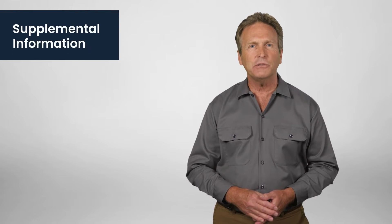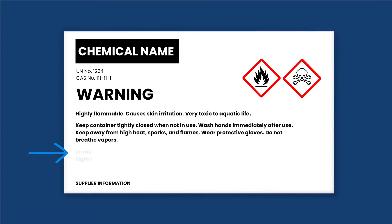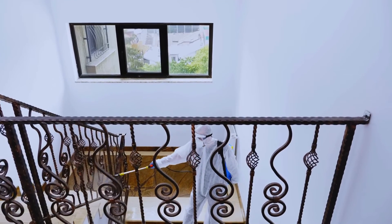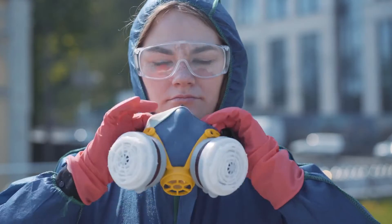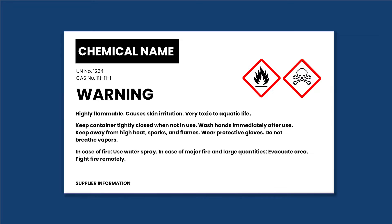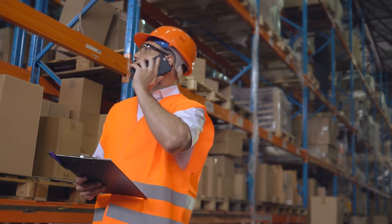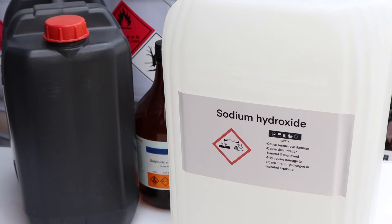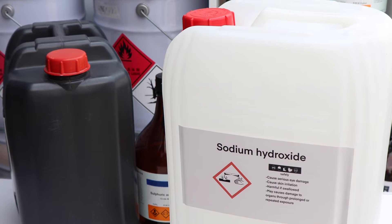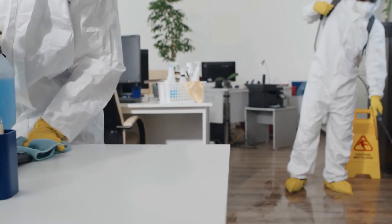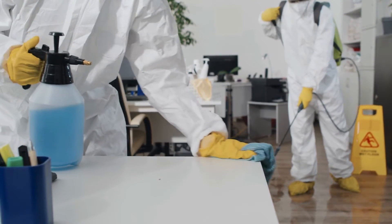We have supplemental information, because sometimes there's more to tell. This space is used for additional instructions or safety measures that don't fit into the other categories. It could include information about certain risks not covered by GHS, or specific national regulations. Lastly, supplier information is where you'll find their name, address, and phone number — important to know who to contact if you need more information or if something goes wrong. Remember, a GHS label isn't just a sticker on a container. It's a vital tool for hazard communication.